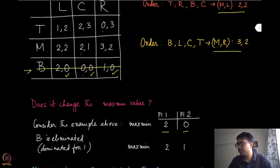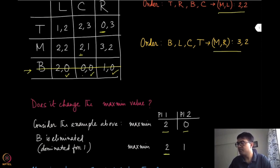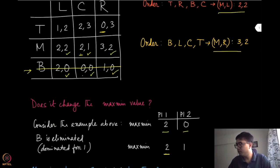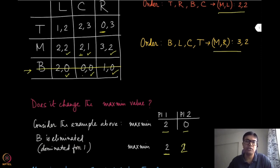Once we have removed the dominated strategy b, the minimum value for player one is two in one row and zero in the other, so the maximin value for player one remains two. For player two, the minimum values across the columns are two, one, and two, so the maximin value will be two — not one. So we can see that removing the strategy did not change player one's maximin value, but it did change player two's maximin value.